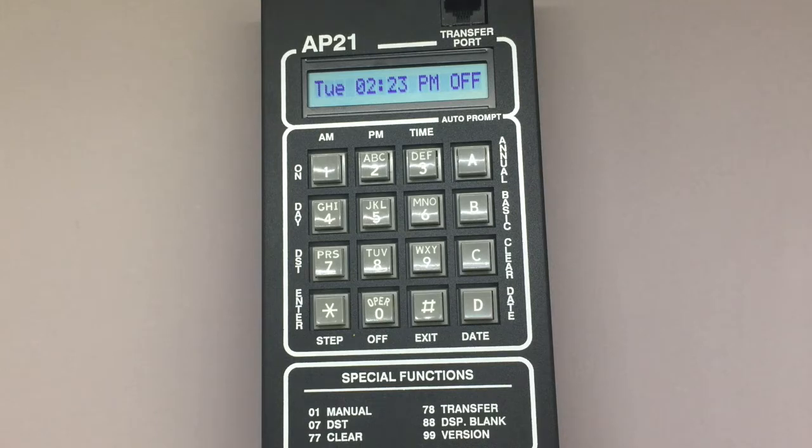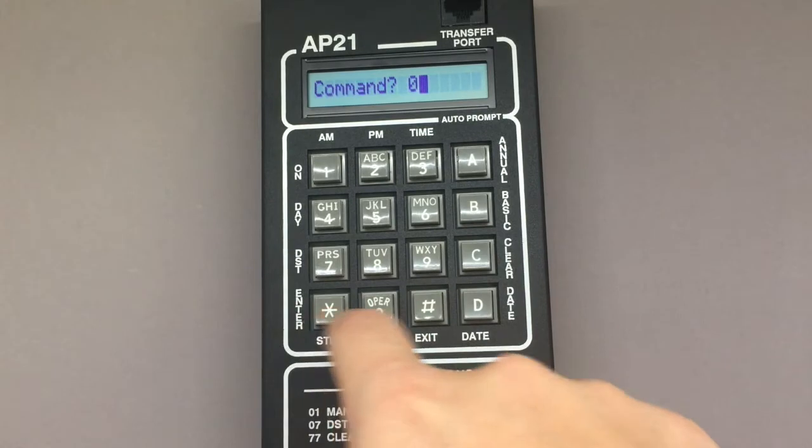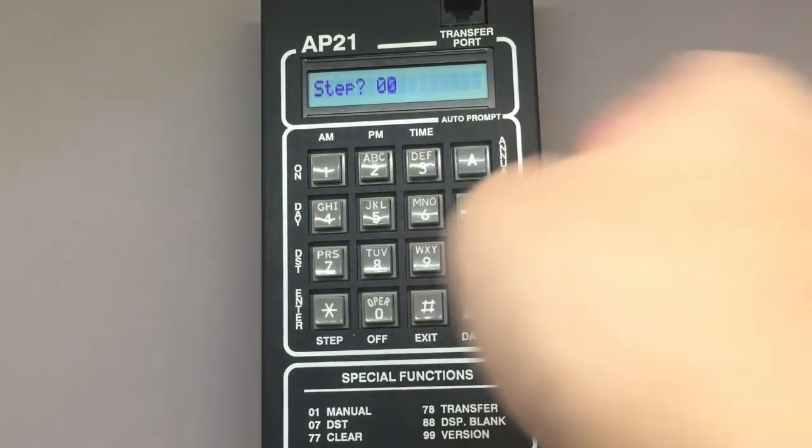To program a basic step, press B star from the home screen. This screen will take you to the step number screen. If you are programming basic steps for the first time, you'll start with step 00, which you see here.